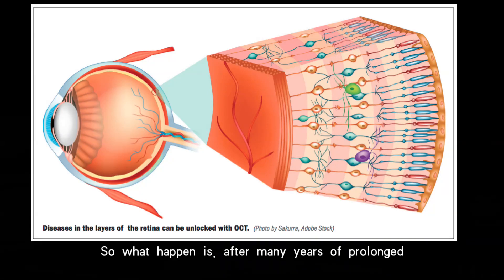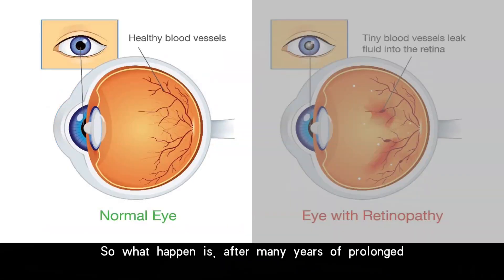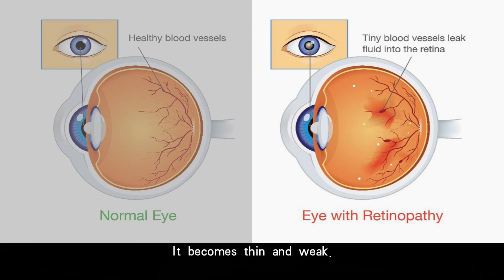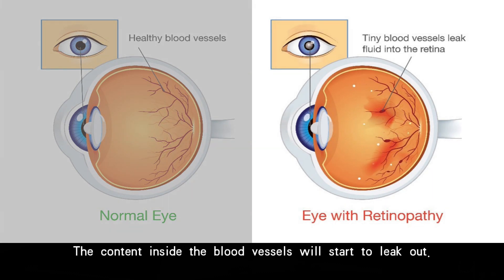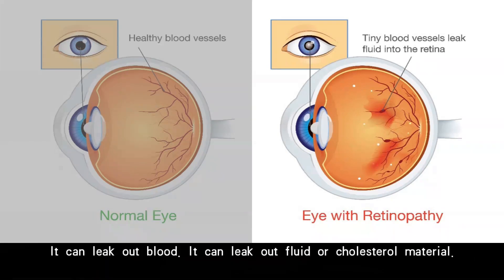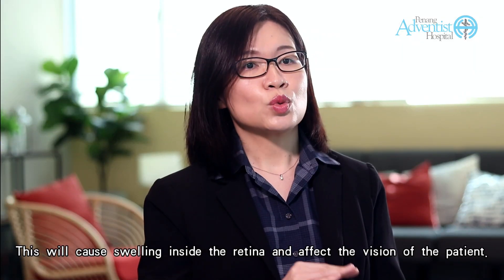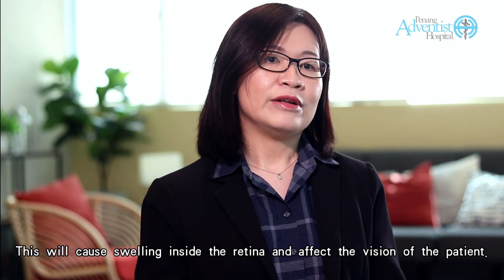After many years of prolonged high blood sugar levels, the walls of the blood vessels in the retina will be damaged — they become thin and weak. The contents inside the blood vessels will start to leak out: blood, fluid, or cholesterol material. This causes swelling inside the retina and affects the vision of the patient.